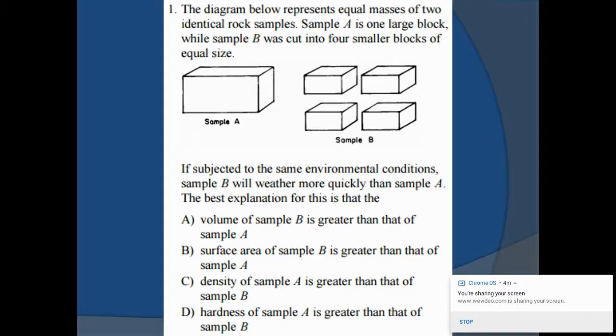The diagram represents equal masses of two identical rock samples. Sample A is one large block, while sample B was cut into four smaller blocks of equal size. If subjected to the same environmental conditions, sample B will weather more quickly than sample A. The best explanation for this is what? The volume of sample B is greater than that of sample A? Well, you can see they're the same volumetrically. Surface area of sample B is greater than that of sample A? That's certainly true. More of it's exposed. The more surface area exposed, the greater the rate of weathering. So we know the answer is B.